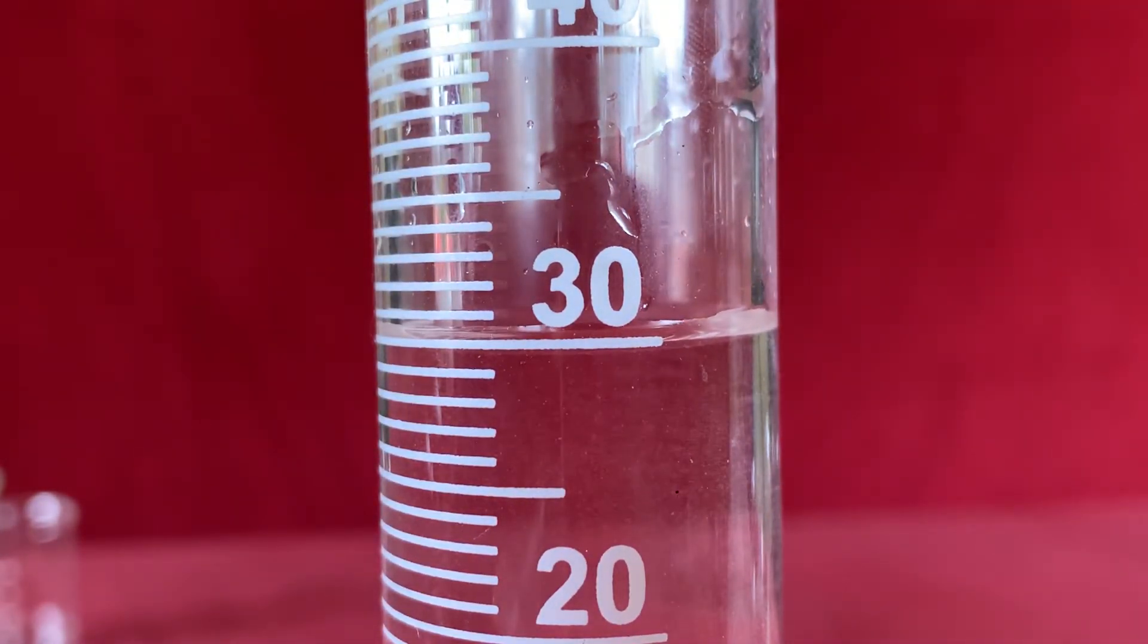You can see here the graduated cylinder gives us a much better idea of how many milliliters of water we have. The meniscus is actually a little bit below 30, even though we were well into the 30 line on the beaker. The graduated cylinder is a much more precise instrument for measuring volume.